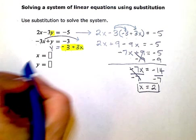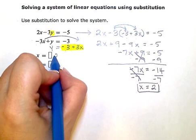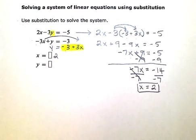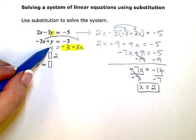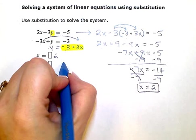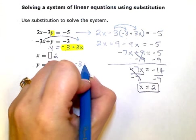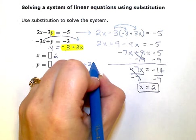So the x value of my solution is 2. Now I just need my y. So I'm going to use this one that tells me that y is equal to negative 3 plus 3 times whatever x is.